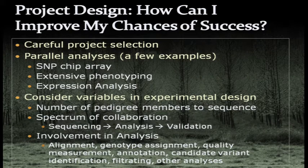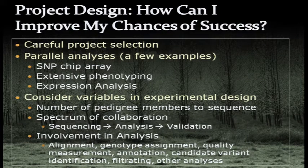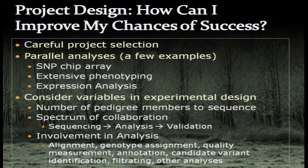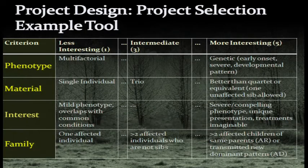There have been many examples this morning of how careful project selection can improve the outcome of an exome project; I'm going to give one more. You can also use parallel analyses — I'll use the SNP chip array as an example, but there are lots of things to consider including phenotyping and expression analysis. In the Undiagnosed Diseases Program we see many families but only have resources to apply exome sequencing to a few of them.